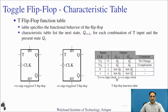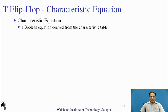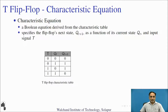Now let us use this function table to derive the characteristic table. To derive the characteristic equation you require the characteristic table. This is the characteristic table of your T flip-flop. When T is equal to 0 and present state is 0, the next state is 0. When T is equal to 0 and present state is 1, the next state is 1. These two rows tell you that when T is equal to 0, the next state has no change — next state preserves the present state, or next state is equal to present state.